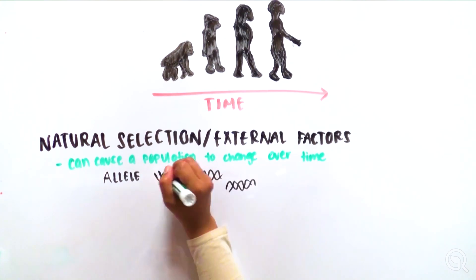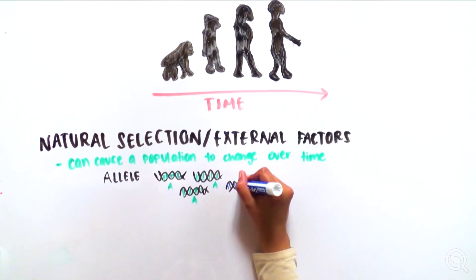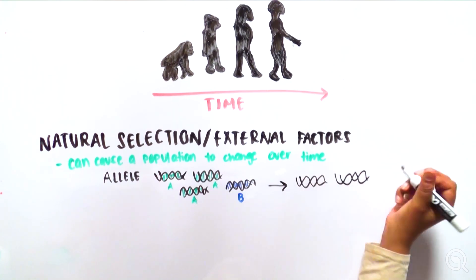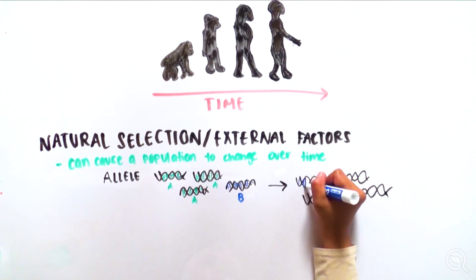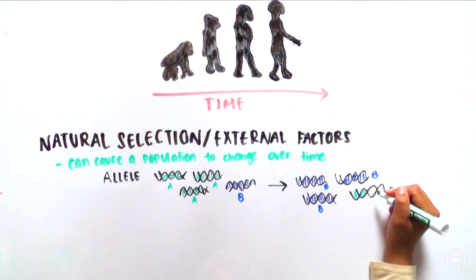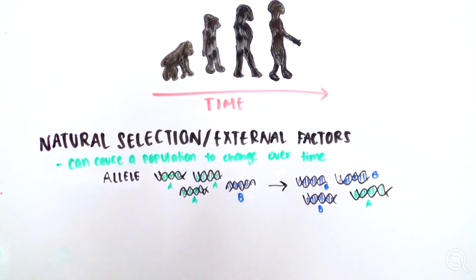One way for scientists to tell whether natural selection, which is the process of organisms adapting to the environment, or other external forces are causing a population to evolve, is determining the population's genetic structure if it were not changing.